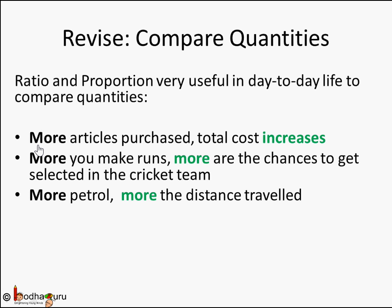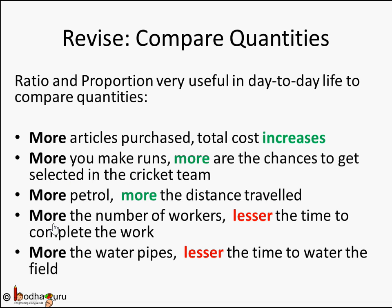For example, given problems like some articles you purchased, you pay this much cost — you purchase more articles, you pay more cost. Or this much litres the car gives and this much distance it travels. If you need to travel more distance, how much petrol will you require? There are some problems like more the number of workers you add, lesser the time it will take to complete any work. Or if you are watering your field, more the water pipes, lesser the time it will take to water the field. So these are all day-to-day life examples where you can use ratio and proportion to compare quantities.